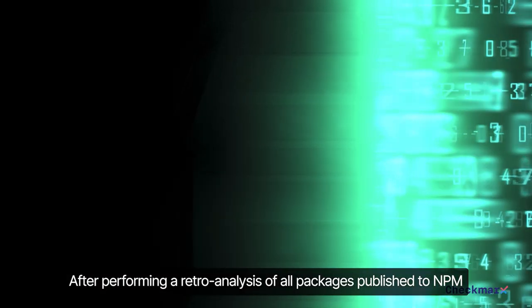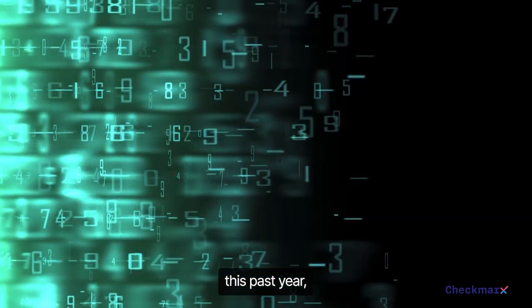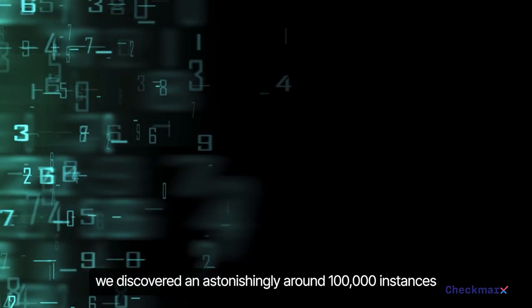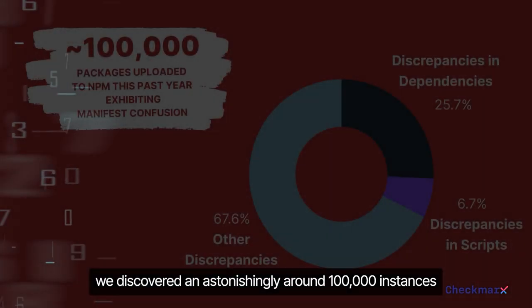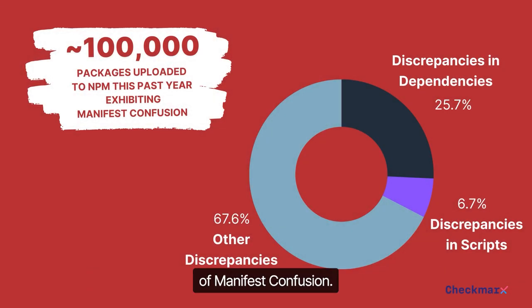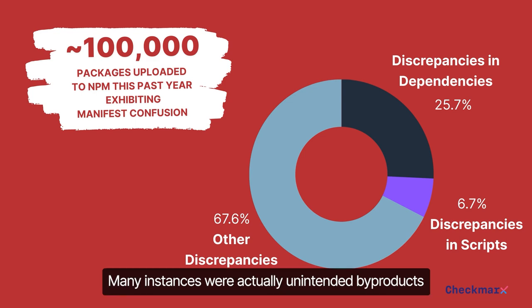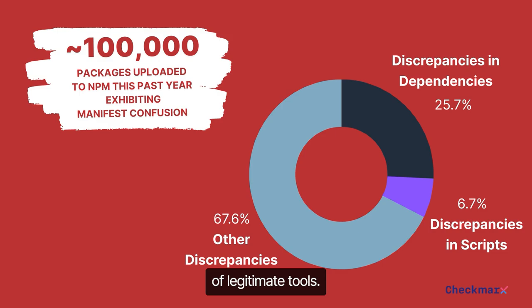After performing a retro analysis of all packages published to NPM this past year, we discovered an astonishing around 100,000 instances of manifest confusion. These instances were not due to malicious intent — many were actually unintended byproducts of legitimate tools.